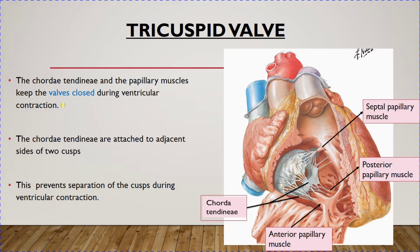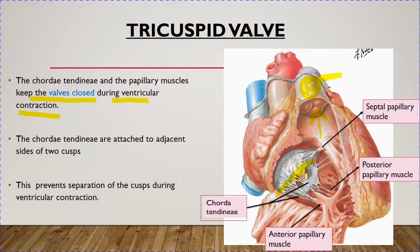The chordae tendineae and papillary muscles, when the papillary muscles contract, keep the valves closed during ventricular contraction. When the right ventricle contracts, the tricuspid valve closes and blood is propelled into the pulmonary trunk. The tricuspid valve is closed so that blood does not regurgitate back into the right atrium. The chordae tendineae and papillary muscles are the two structures that keep the valves closed during ventricular contraction.